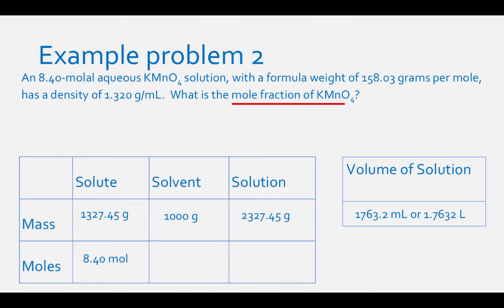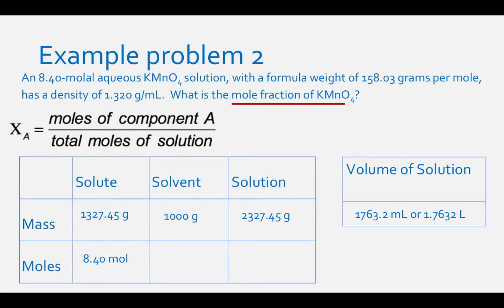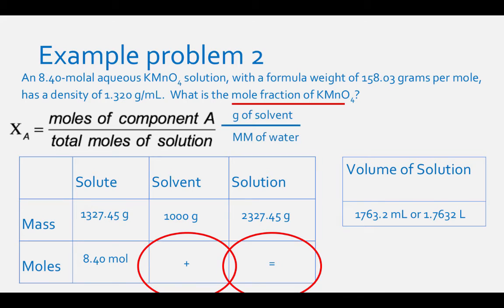The next question asks for the mole fraction of KMnO₄, which equals moles of KMnO₄ divided by total moles of solution. To find total moles of solution, first find moles of solvent and add it to moles of solute. To find moles of solvent, divide grams of solvent by the molar mass of H₂O (18.016 g/mol), since this is an aqueous solution.